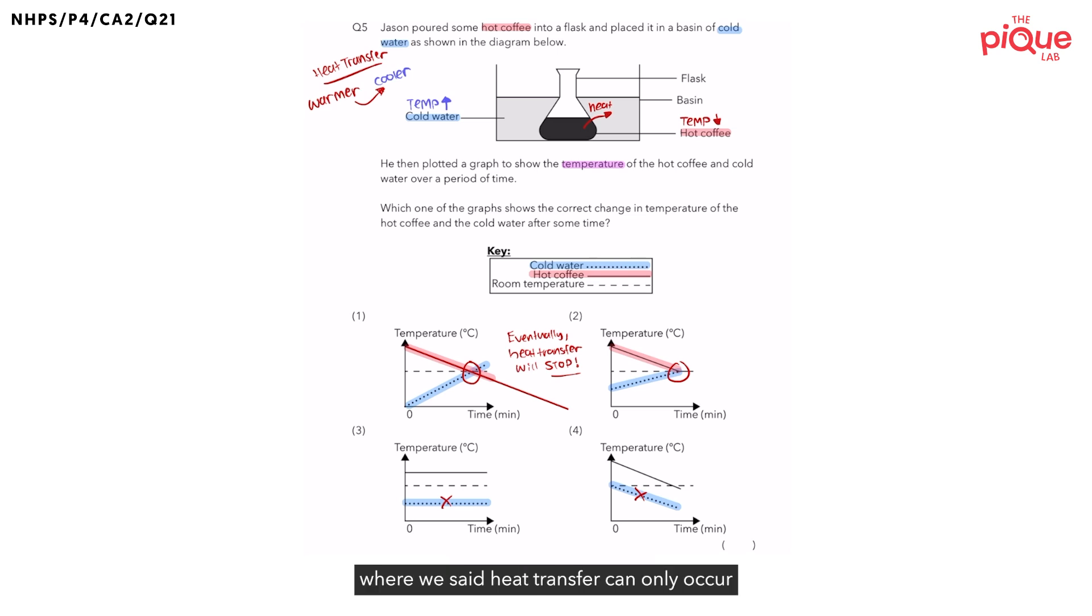Let's circle back once again, where we said heat transfer can only occur from the warmer region to the cooler region. If they were the same temperature, let's say both the coffee and water is at 30 degrees Celsius, would the coffee still be warmer than the water? No. Which means, now there is no longer a warmer object or a cooler object. So then, would there be any more heat transfer between the coffee and the water? No. Hence, we can say that when two objects have reached the same temperature, there would no longer be any heat transfer, making the graph in option 1 not possible.